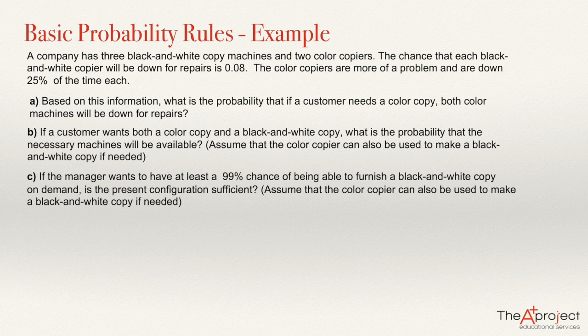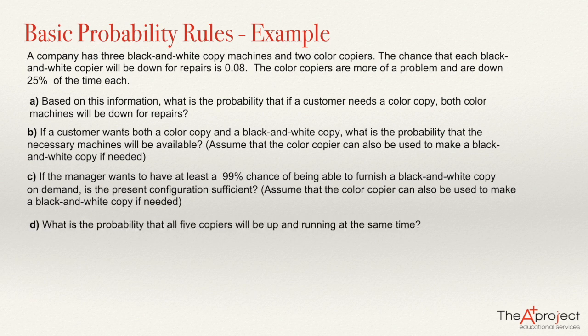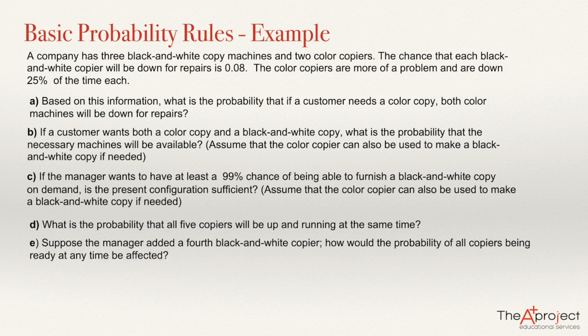If the manager wants to have at least a 99% chance of being able to furnish a black and white copy on demand, is the present configuration sufficient? What is the probability that all five copiers will be up and running at the same time? And suppose the manager added a fourth black and white copier — how would the probability of a copier being ready at any time be affected?